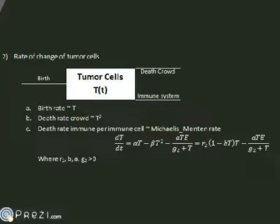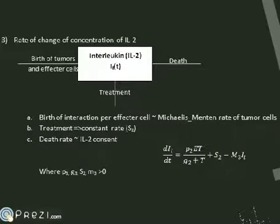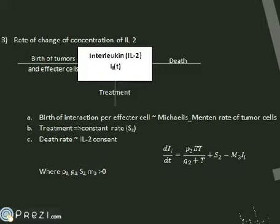The rate of change of tumor cells: tumor cells went through the process of malignant change, resulting in the birth of tumor cells. Tumor cell deaths can be caused by crowding and the immune system attacking. The rate of change of interleukin concentration: interleukin prolongs the life of natural killers and B cells, so by the birth of the tumor, the interleukin is produced to help effector cells.